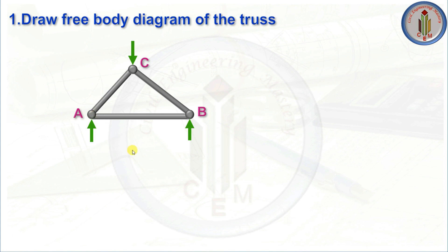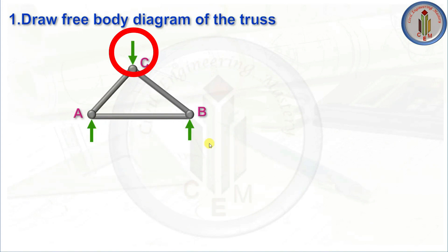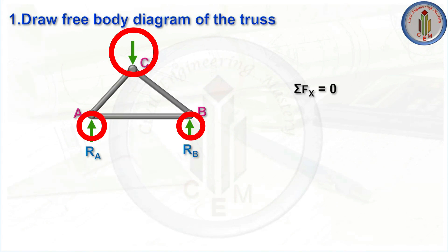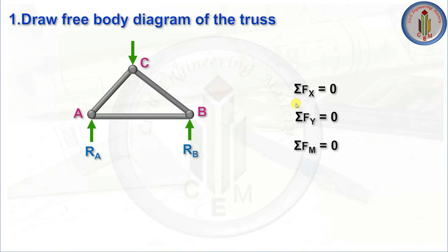Whenever we need to calculate the forces at each joint, the truss must satisfy the equilibrium conditions. There are two major steps: first, draw the free body diagram of the truss, and second, draw the free body diagram of each joint. When a load is applied, there are two support reactions, RA and RB. The truss must satisfy the equilibrium equations: summation of Fx = 0 and summation of Fy = 0.